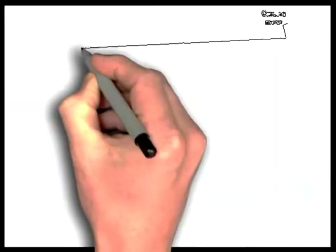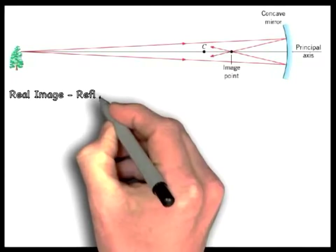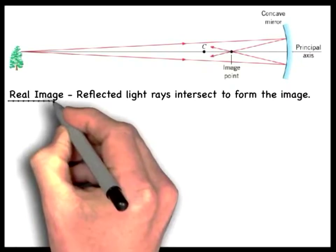Now imagine an object, say a tree for example, located in front of a concave spherical mirror. A point on this tree lies on the principal axis and is beyond the center of curvature C. Light rays emanate from this point and reflect from the mirror, consistent with the law of reflection. If the rays are near the principal axis, they cross it at a common point after reflection. This point is called the image point, and since light rays actually come from the image point, the image is called a real image.